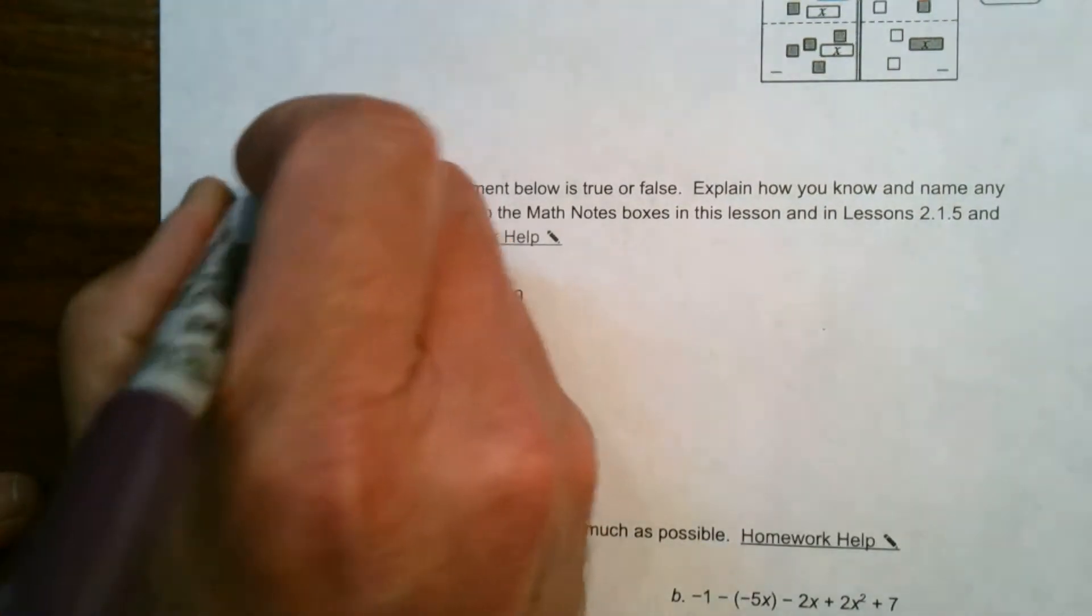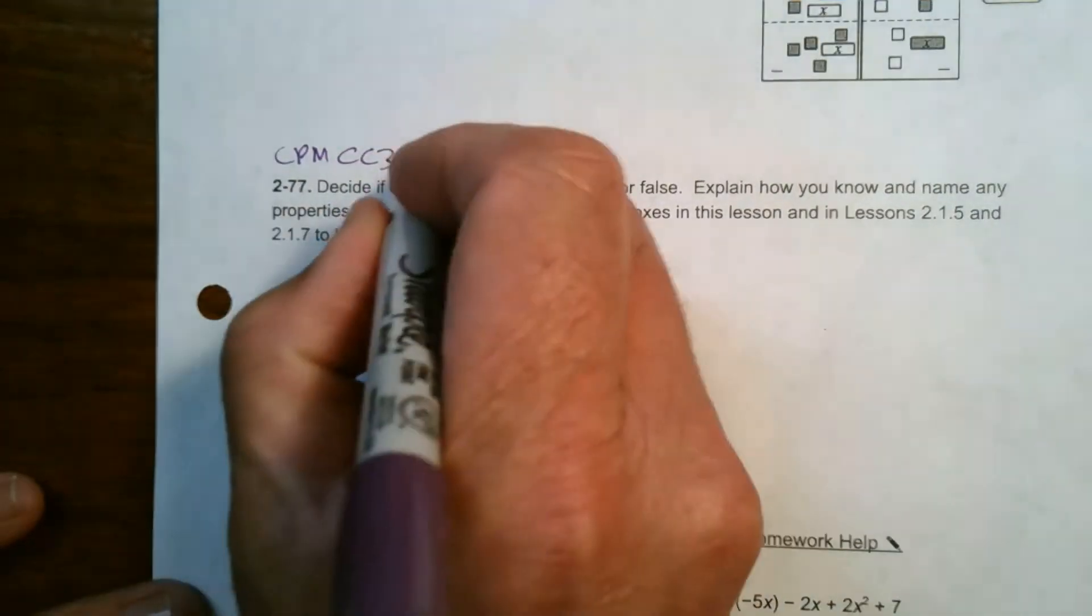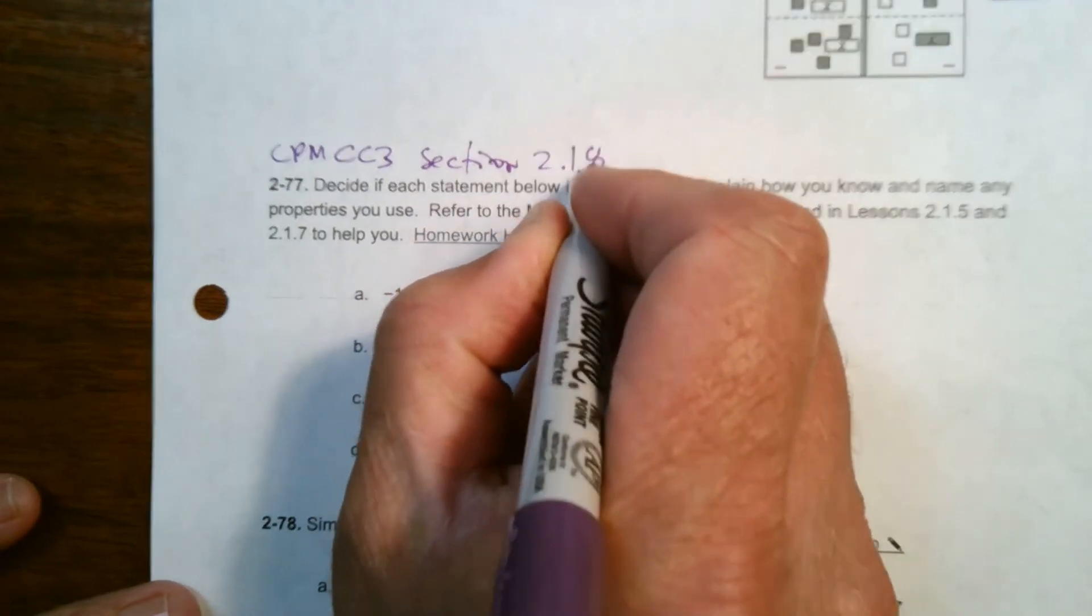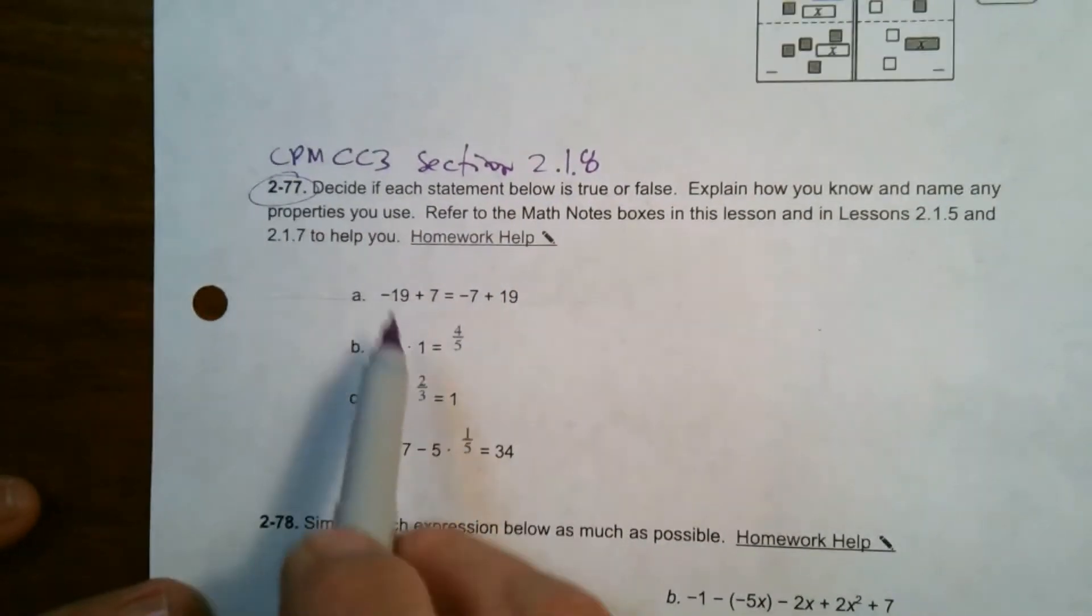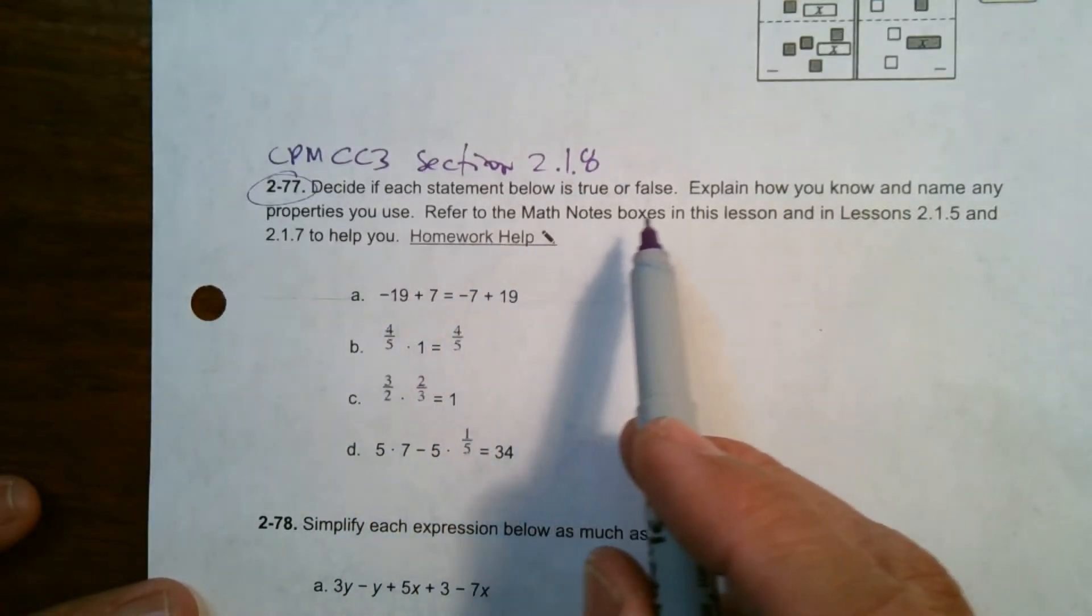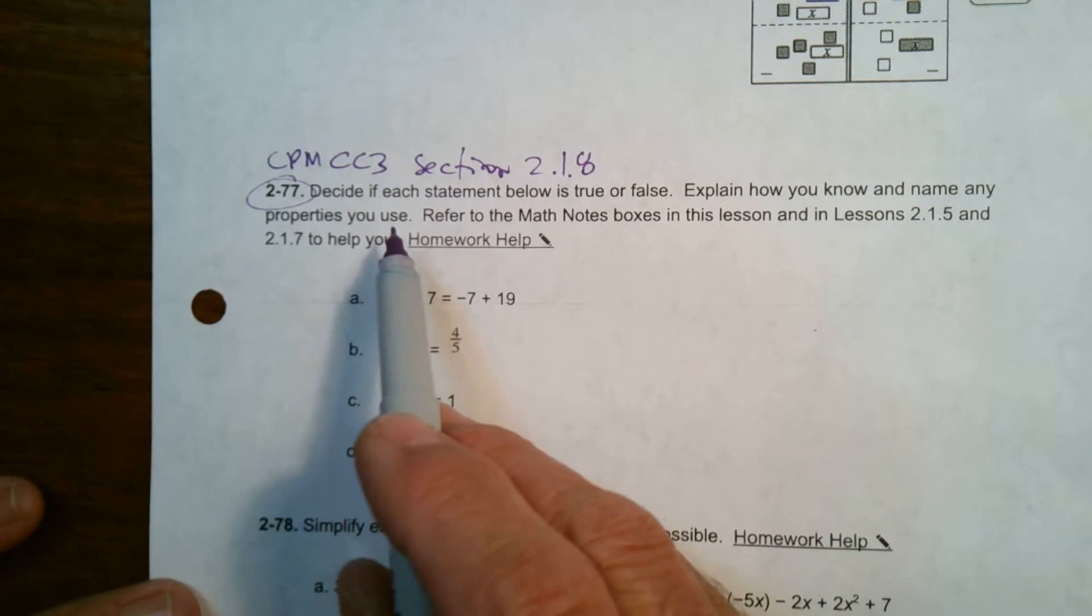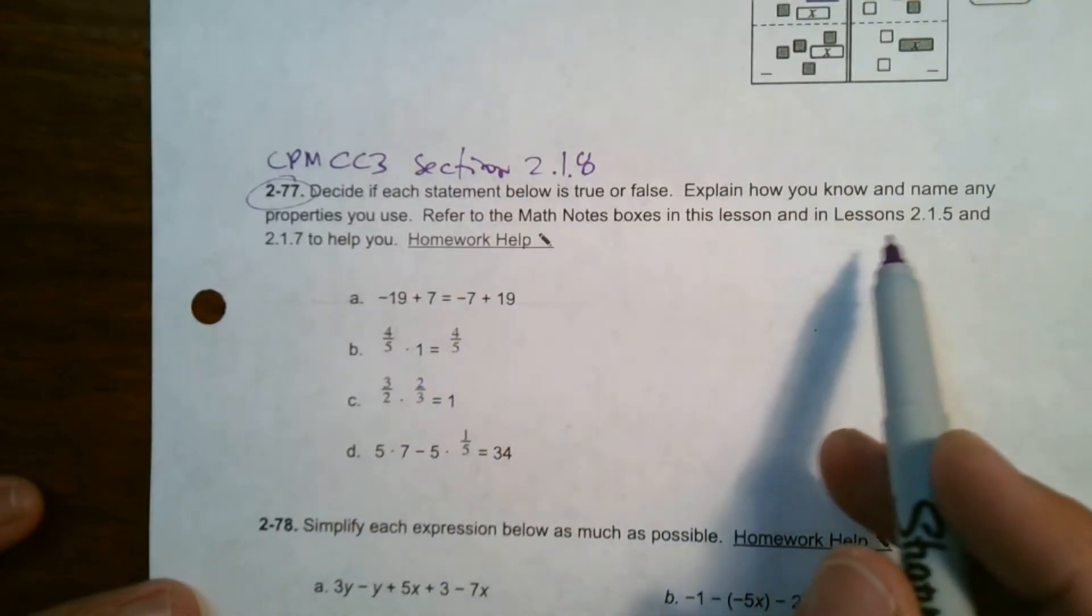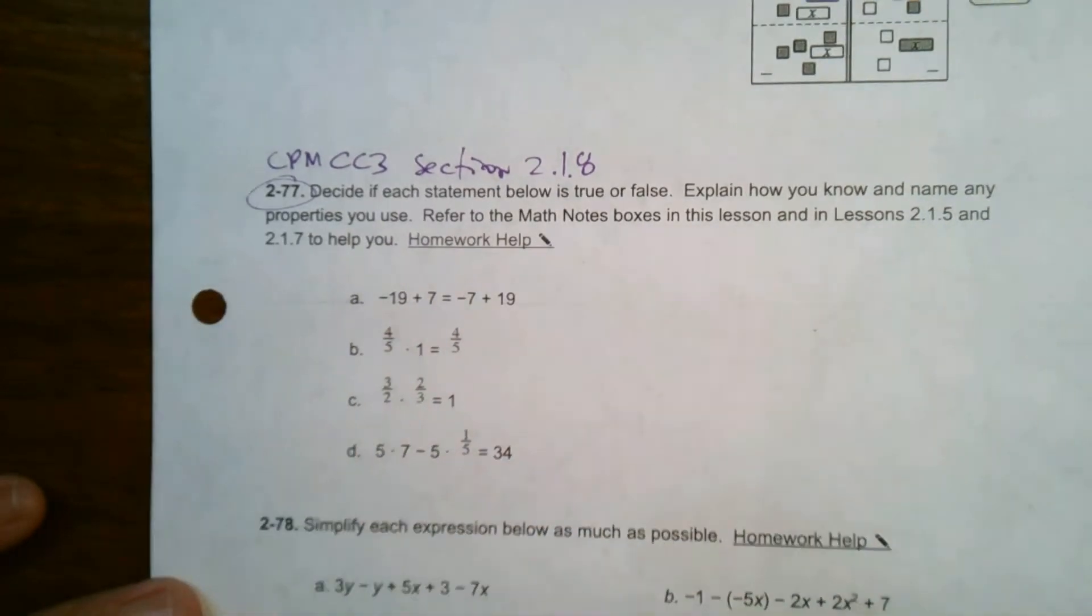So we've got some properties we're going to talk about, as well as how to simplify number sentences here. This is from CPM Course 3, Section 2.1.8, number 2-77. It says decide if each statement below is true or false, explain how you know, and name any properties you use. Refer to the math notes boxes in Lessons 2.15 and 2.17.